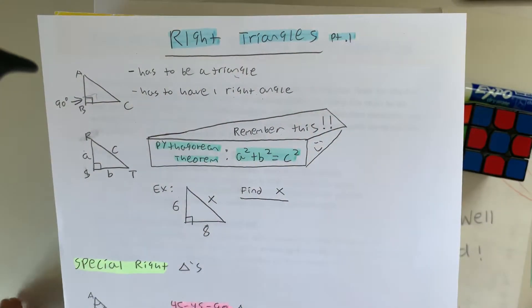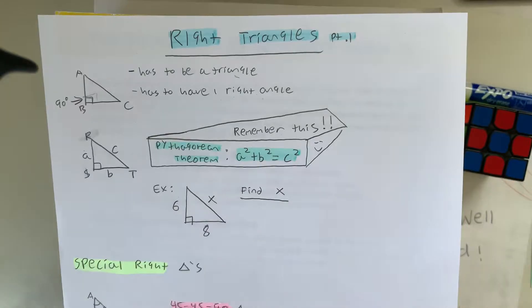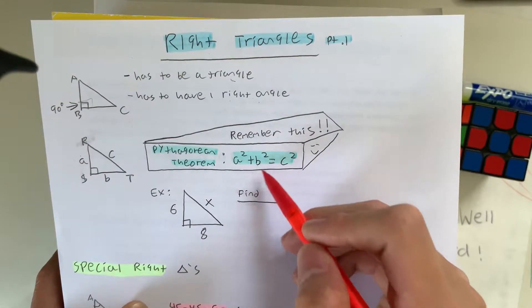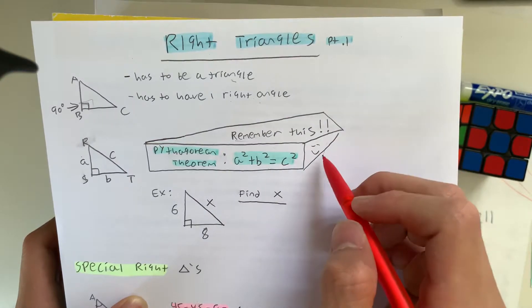And next, we have the most infamous theorem in all of math, the Pythagorean Theorem, which, as you guys all know, a squared plus b squared is equal to c squared. This is very important, so remember this.